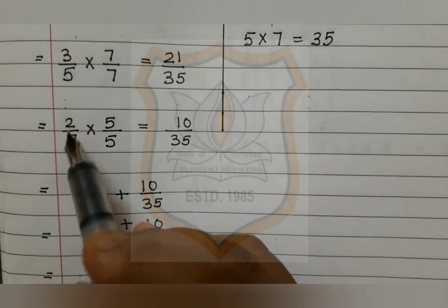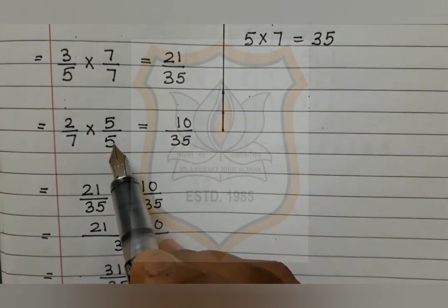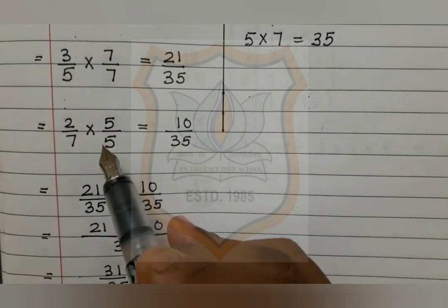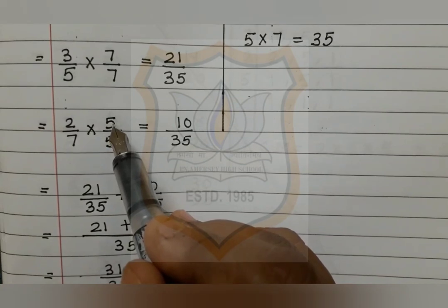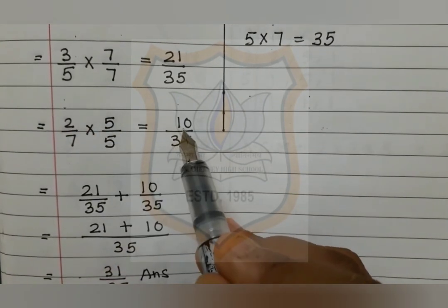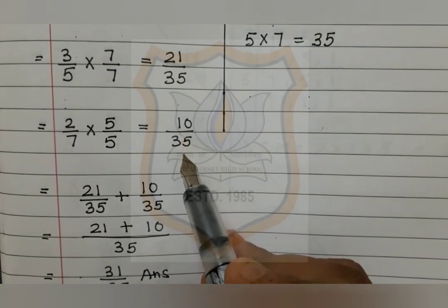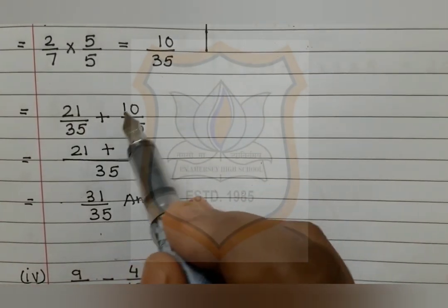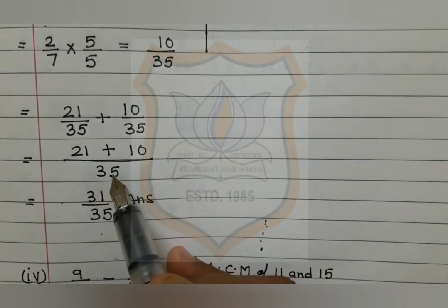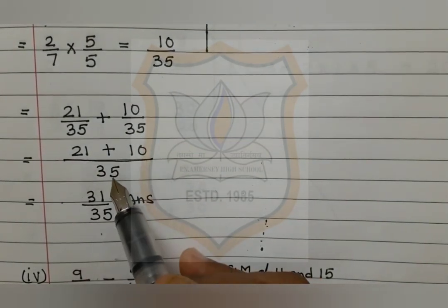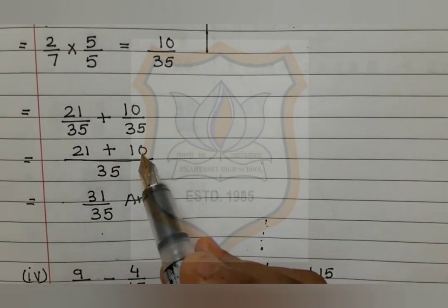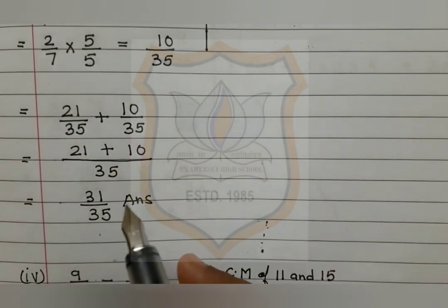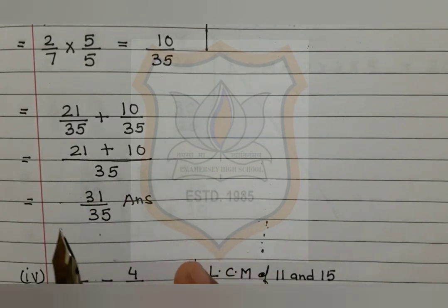For 2 upon 7: 7 is multiplied by 5 to get 35, so the numerator 2 is also multiplied by 5 to give 10. Our fraction becomes 10 upon 35. Now they are like fractions: 21 upon 35 plus 10 upon 35. Taking 35 as common, we write 21 plus 10 above the fraction line, giving 31 upon 35. We do not convert this to a mixed fraction because it is a proper fraction.